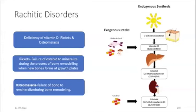In the liver, vitamin D2 and D3 undergo 25-hydroxylation producing 25-hydroxyl vitamin D. A second hydroxylation occurs in the kidney at position 1, forming the active metabolite 1,25-hydroxyl vitamin D, which promotes intestinal absorption of calcium and phosphorus, increases renal phosphate reabsorption, and acts on bone to release calcium and phosphate.